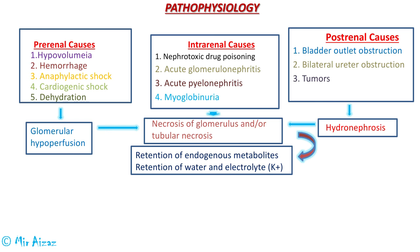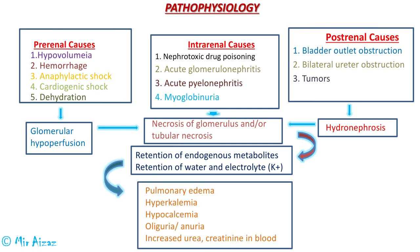When kidney functioning is impaired, waste materials start to accumulate inside the body. There is also retention of water and electrolytes, and all this ultimately leads to pulmonary edema, hyperkalemia, hypocalcemia, oliguria, and increased urea and creatinine in the blood.